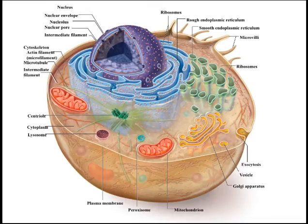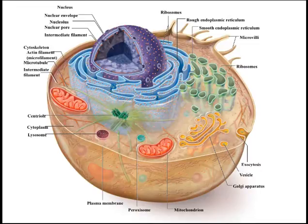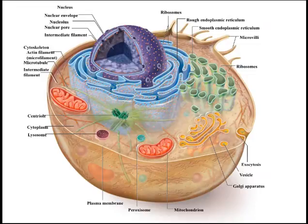Now let's take a look at a eukaryotic cell — this is an animal cell, as you can notice by the absence of a cell wall and the absence of chloroplasts. The DNA material is enclosed inside a nucleus, within a nuclear envelope. There are also ribosomes; some of these are associated with a membrane system called the rough endoplasmic reticulum. There is also cytosol, which is where all the organelles are found.